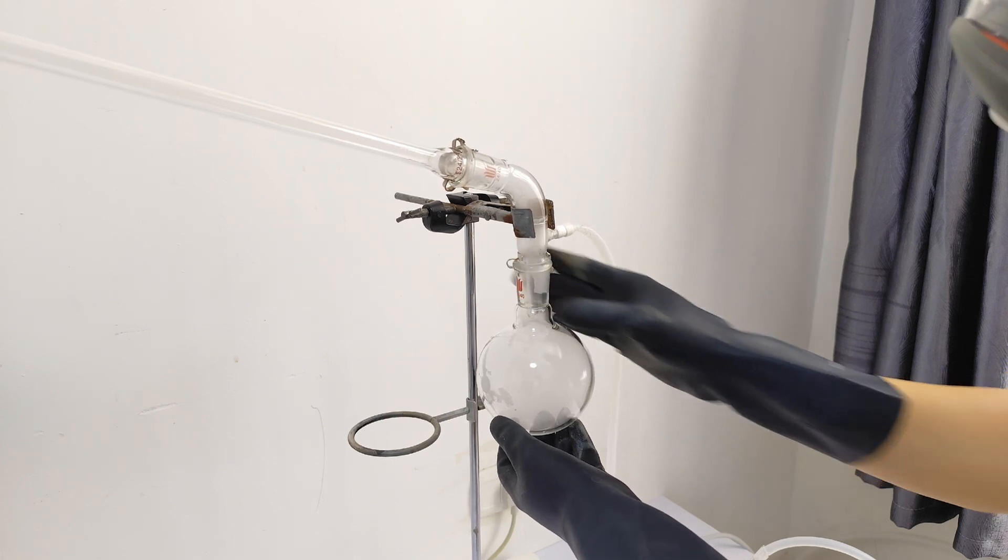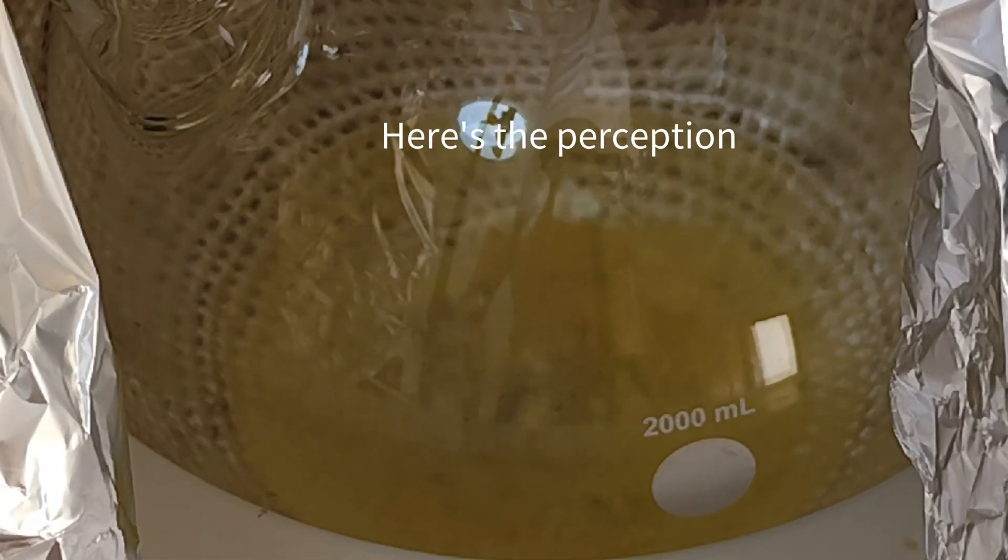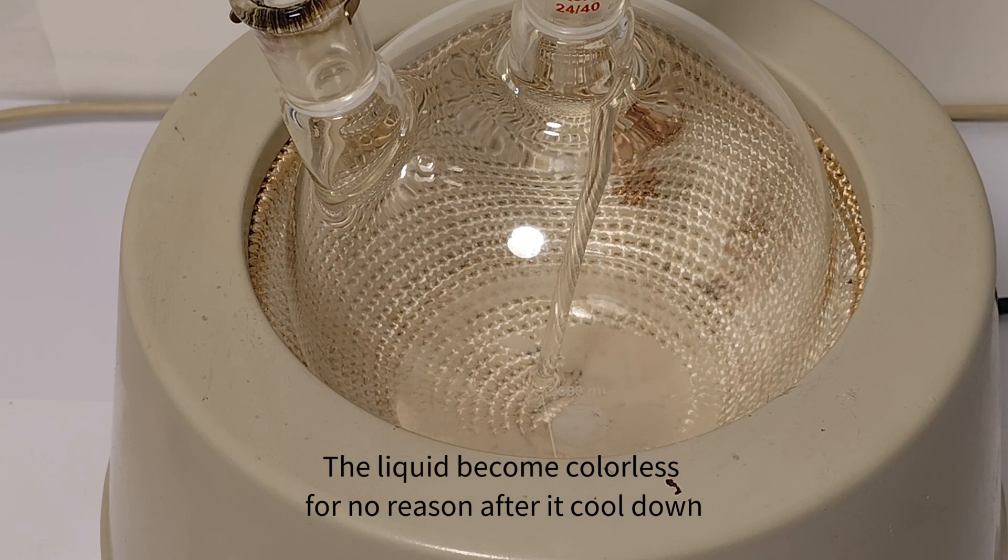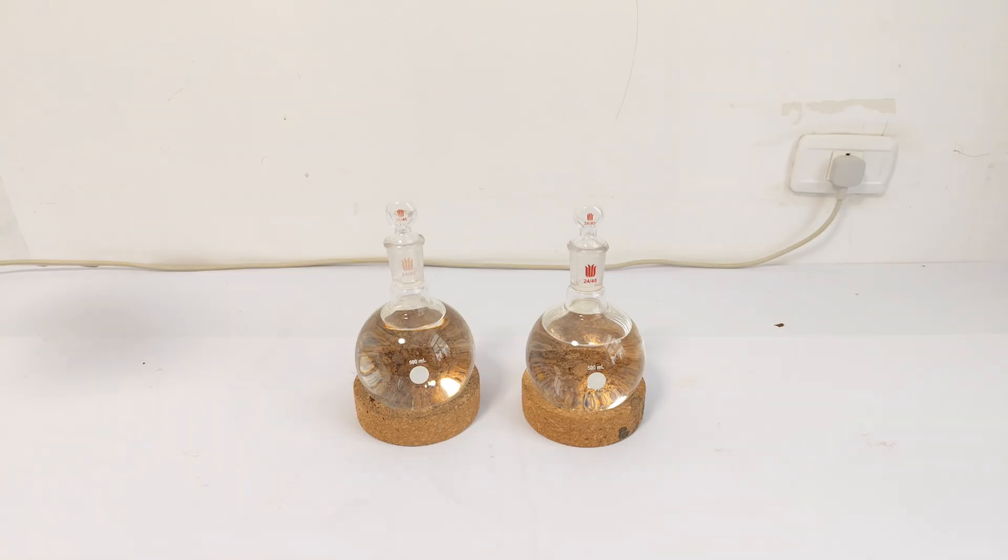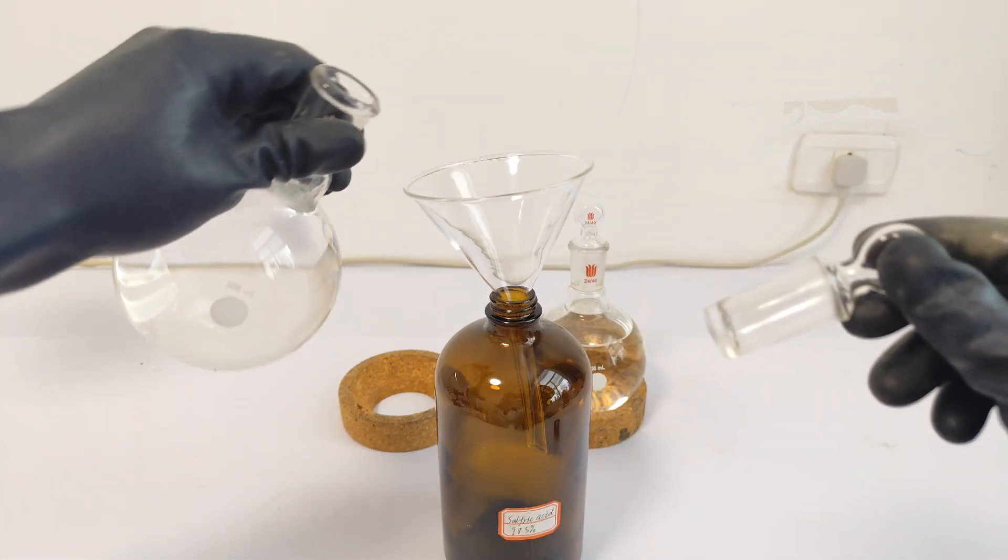After a few hours of distilling, what's left in the big flask is some lemon yellow liquid with some precipitate at the bottom, which I assume should be sodium sulfate. And to prevent the liquid from boiling away, I turned off the heater. What I finally got is two flasks of sulfuric acid, and the total volume is about 1L. So just pour them all in a brown bottle.